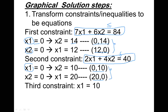The third constraint: x1 less than or equal to 10. This transforms simply to x1 equals 10. We don't need any extra points because x1 equals 10 is a vertical line on the graph. We don't need any points to visualize or plot this constraint. Step one is now finalized — we have transformed all constraints to equations and found two points for each linear equation.